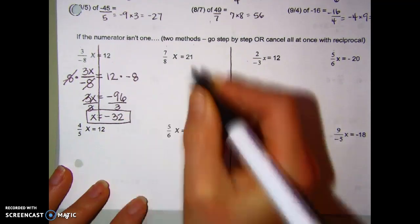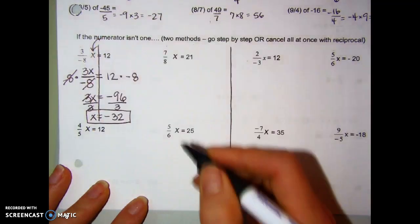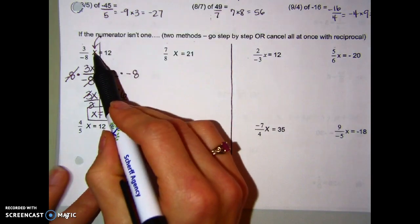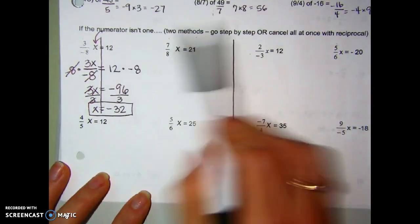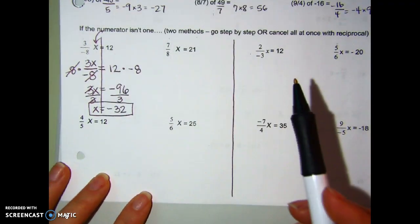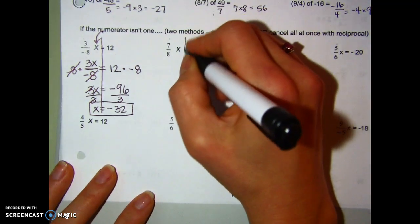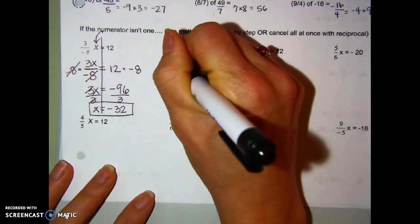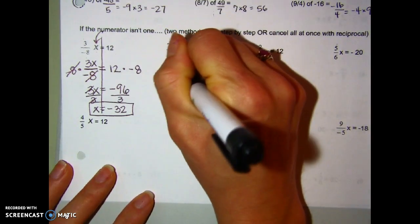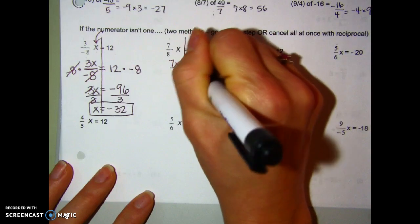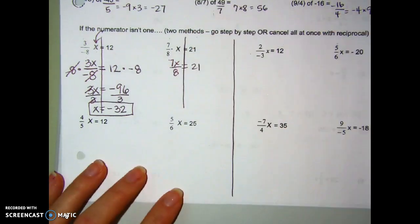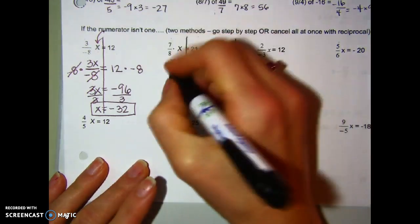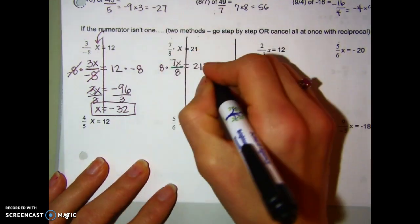I can always plug this back in — which you should do on all your homework and on a quiz — to double-check it. For the next example: 7-eighths times x really means 7 times x divided by 8, equal to 21. To undo dividing by 8, multiply both sides by 8. Cross out what cancels, bring down what's left — 21 times 8 is 168.